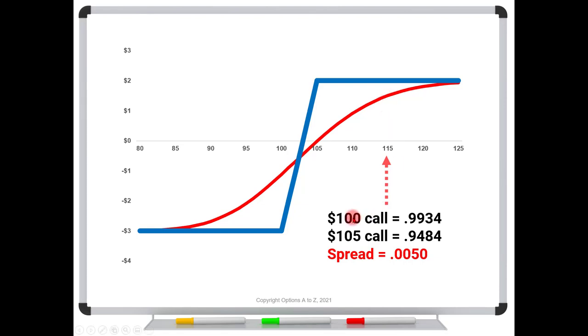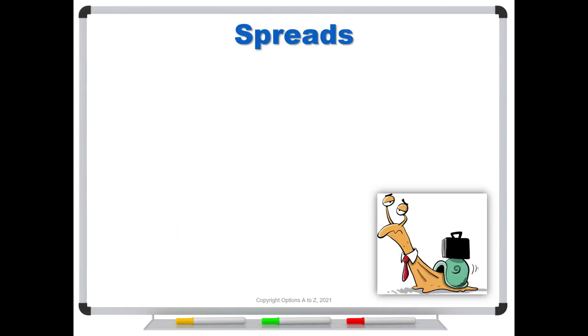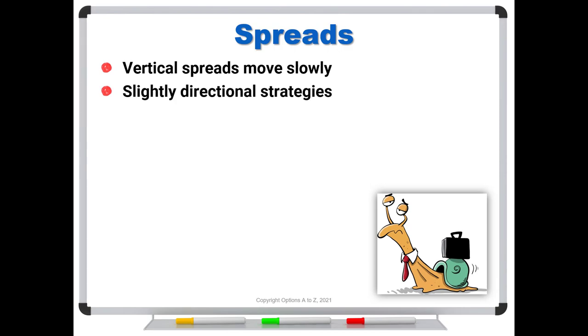So the thing to understand here is that, yes, this 100 call that you have might have a very high delta, but if it's part of a spread, it's getting reduced. And depending on where the stock price is, depending on volatility and depending on time, those numbers are going to change. And that's why you have to understand your strategies and your Greeks if you are to make very good use of your vertical spreads. So if you get nothing else from this video, understand, for those of you using vertical spreads, that your vertical spreads move slowly. They are a slightly directional strategy, but they're also about time decay.